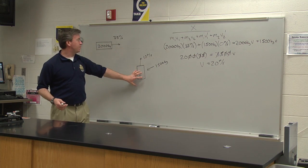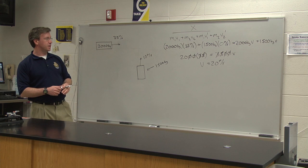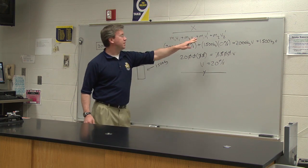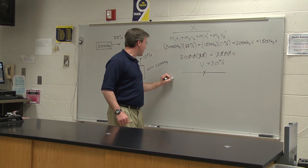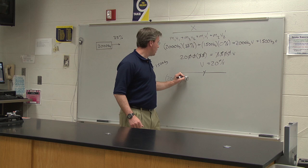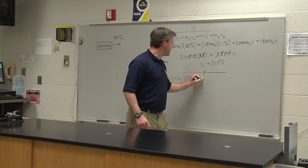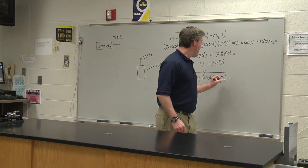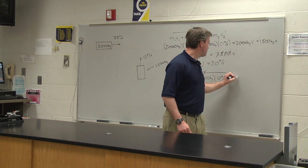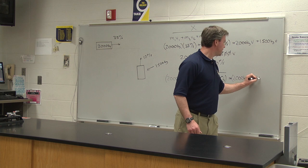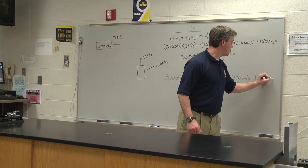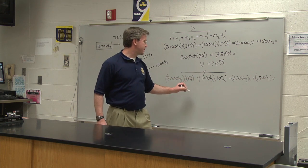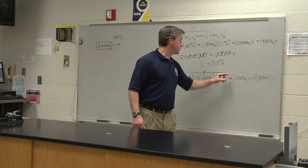Before the collision we had 35 meters per second, but now because the mass increased — the car got hit by something else — the speed is 20 meters per second. We do the same thing in the y-dimension using the same equation. Now 2,000 kilograms has no velocity in y, and 1,500 kilograms is moving in the y-dimension at 10 meters per second. After sticking together: 2,000v + 1,500v. Working out 1,500 × 10 = 15,000 equals 3,500v.